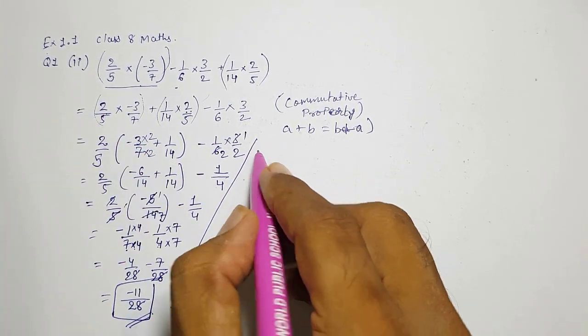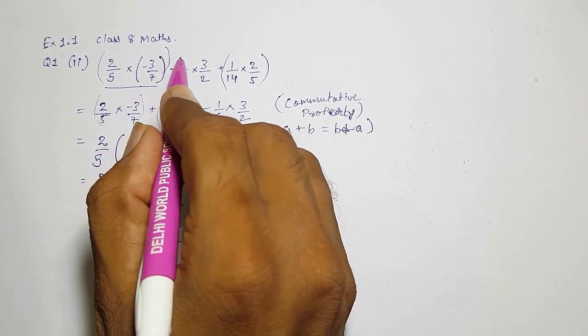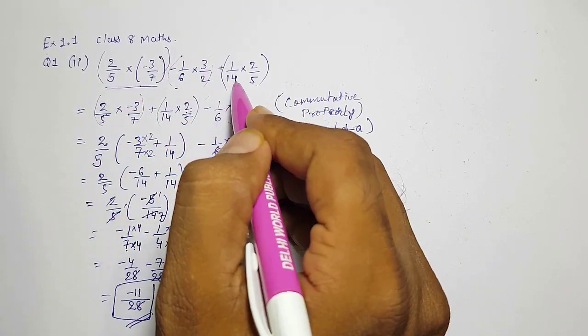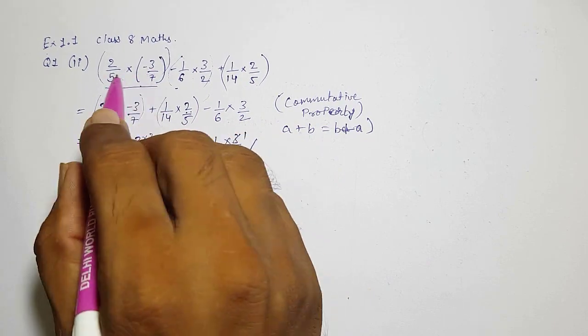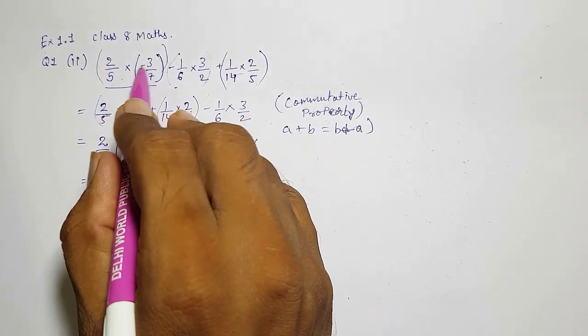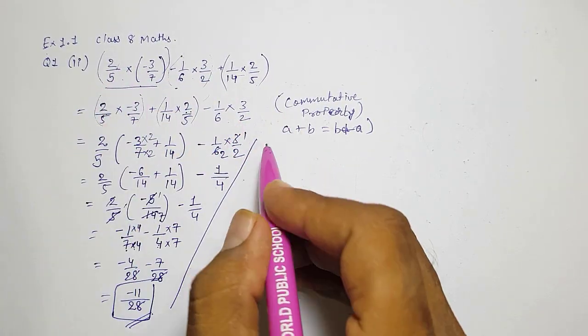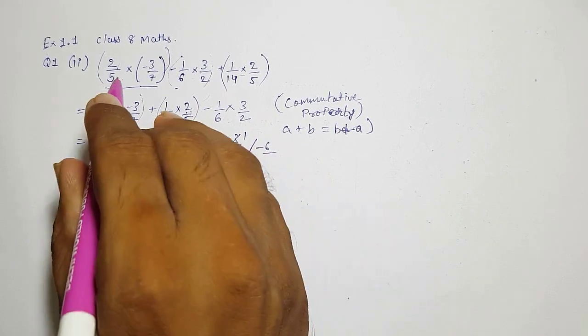Directly also we can solve this. How? Directly if you want to multiply, you can take this in bracket, take this also in bracket because multiplication sign is there between these two terms, multiplication sign between these two terms, so directly multiply. If cancellation is happening cancel it, otherwise directly multiply.